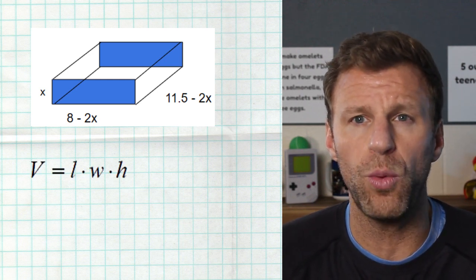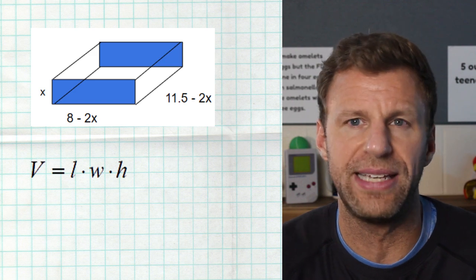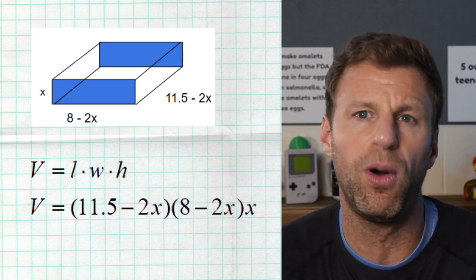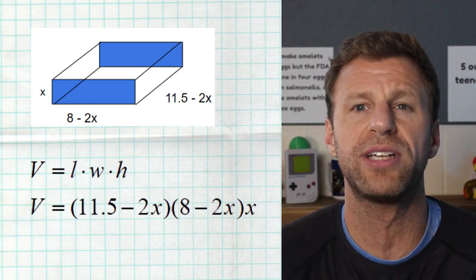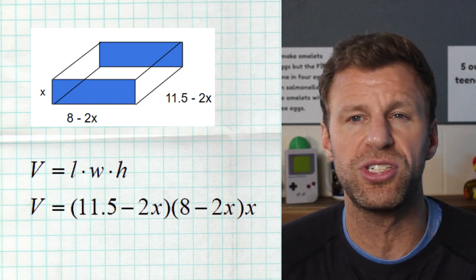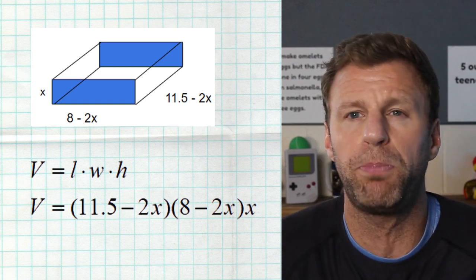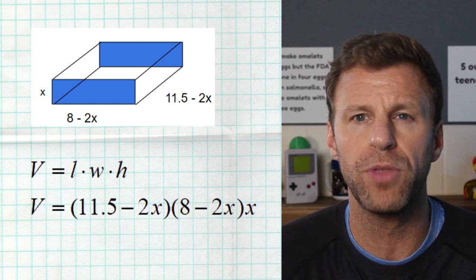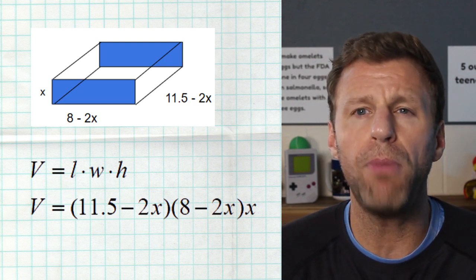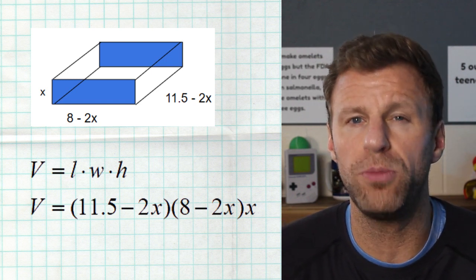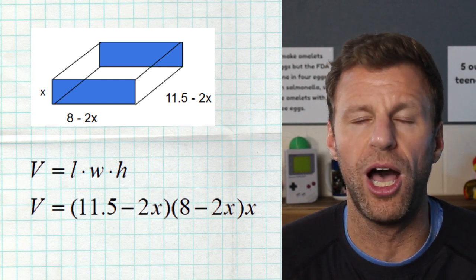So the length and the width, again, are interchangeable. That's the eight minus two x and the 11.5 minus two x, multiply those together. And then finally, we're going to multiply by the height, which is just x. We get a nice, pretty simple cubic formula or a cubic function that models the volume of this open top box.